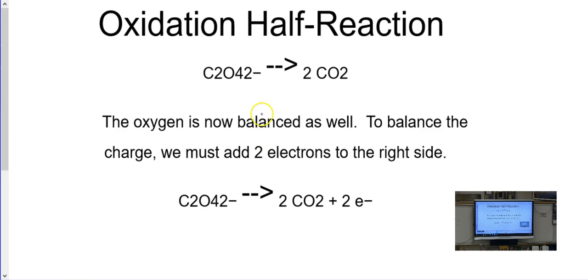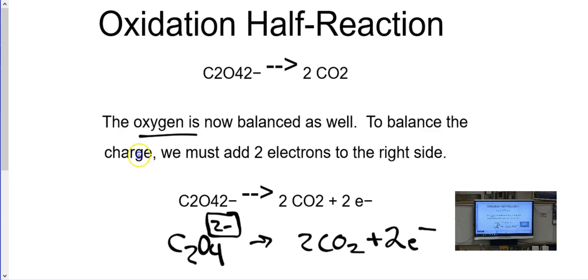So next, that also took care of the oxygen. It is also balanced. So the next thing to do, to balance the charge, we must add two electrons on the right side. So please notice what I mean by the charge. So this is C2O4 two minus, and over here, it was just two CO2.